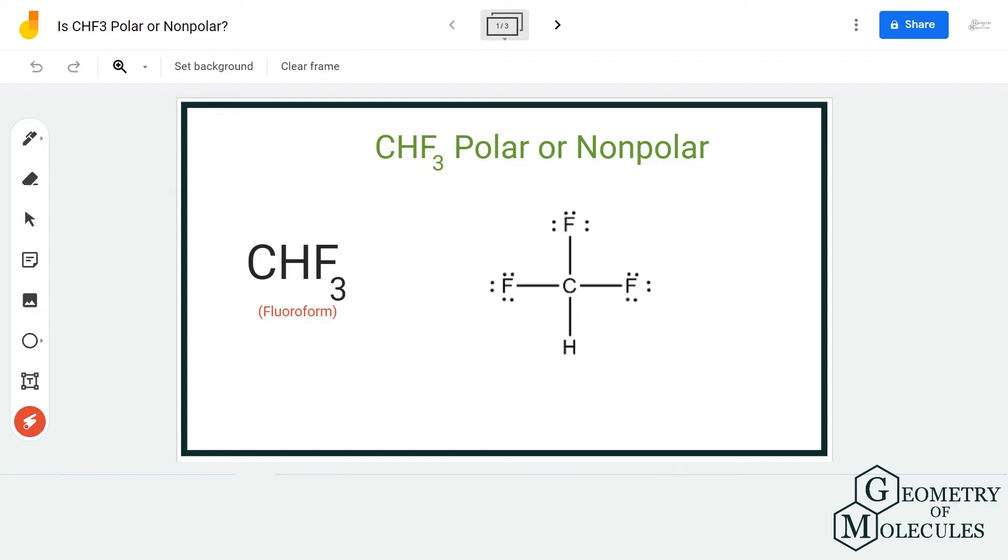Hydrogen and carbon do not have that electronegativity difference between them, but when you compare the electronegativities of fluorine with hydrogen and carbon, it is quite higher, as fluorine is the most electronegative element on the periodic table.